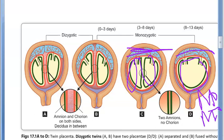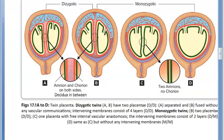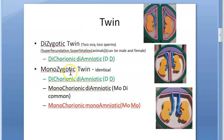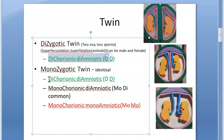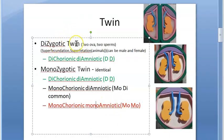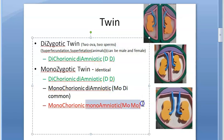MoDi twins show intervening membranes between the amniotic sacs, whereas MoMo twins have no intervening membranes. Note that there is no such thing as dichorionic monoamniotic twins — that combination does not occur. To recap: dizygotic twins are fraternal, bin ovular; monozygotic twins are identical, uni ovular — with subtypes DD, MoDi, and MoMo twins.